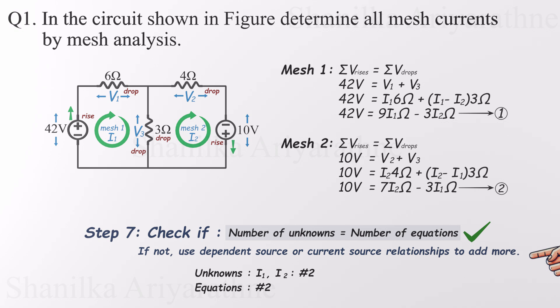If we were missing an equation, we'd have to look for extra relationships, like dependent sources or current constraints. But here we're good to go. Time to solve.